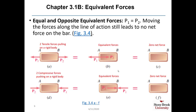Equal and opposite equivalent forces are identified as P1 and P2. For equal and opposite equivalent forces, when you move them along their line of action you still have no net force on the rigid body. In figure 3.4a, two tensile forces P1 and P2 are pulling the rigid body apart, and moving P2 slightly so they're equal gives zero net force as shown in figure 3.4c.